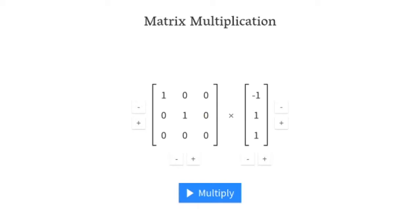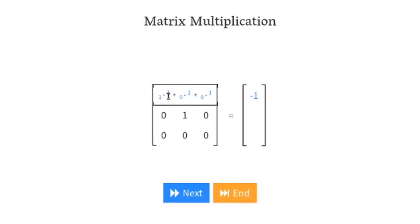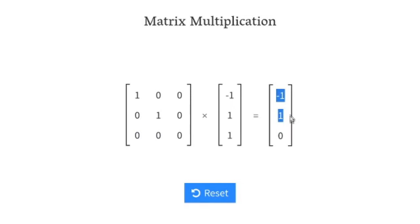I'll be showing you an example of how it works on a website called matrix multiplication — the link will be in the description. This is the projection matrix and here we have a 3D point, which can be a vertex of our cube. I'm going to multiply it so you can see what happens. You see it multiplies with X, and Y and Z collapse to zero, and this is our projected point.